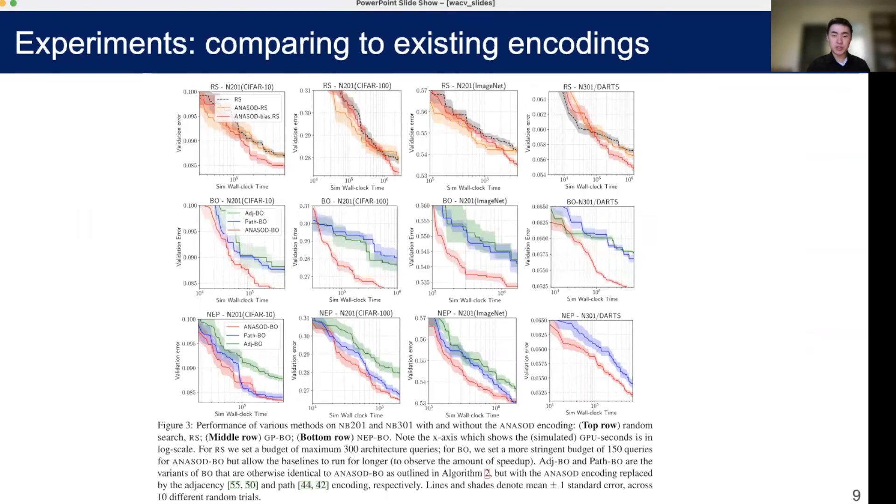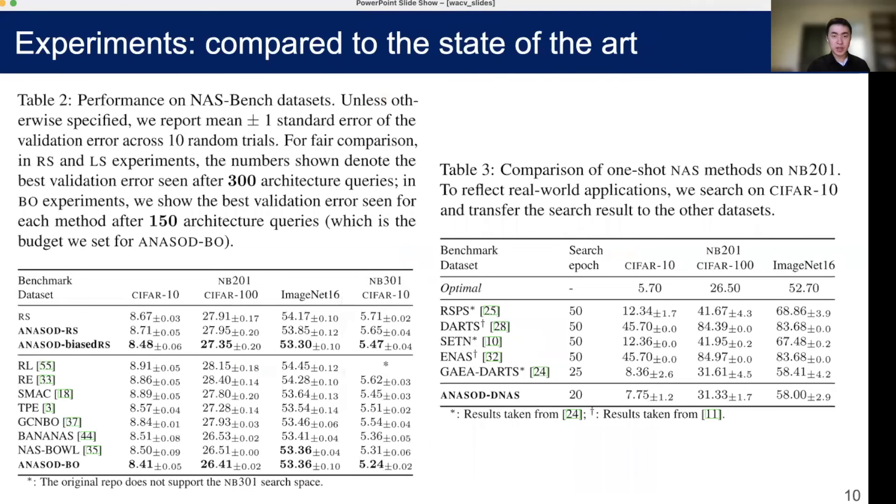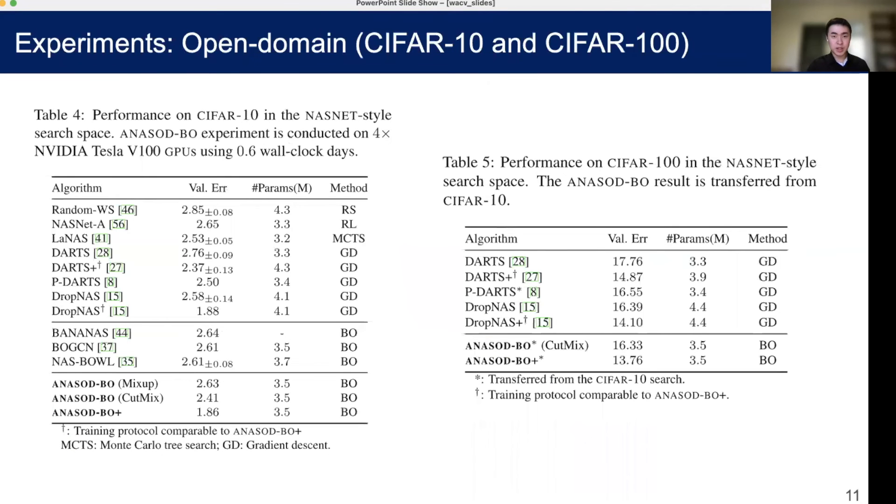For the experiments, we have shown that compared to existing exact encodings in random search and two different surrogate models of Bayesian optimization, ANASOD has a huge speed-up and performance boost. Compared to the state-of-the-art, we find that even though ANASOD is an approximate solution, its performance is very competitive in both ANASOD RS, BO, and differentiable NAS.